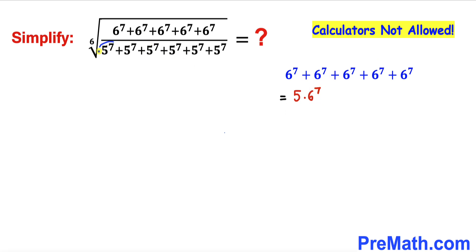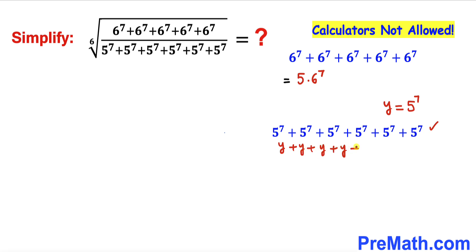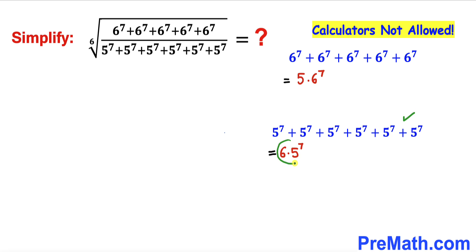Likewise, let's focus on the denominator part. Now let's assume that 5^7 is y, so y equals 5^7. Then this expression could be written as y plus y plus y plus y plus y plus y plus y — six times. Combining all these y's gives us 6 times y. We know y is 5^7, so therefore this could be written as 6 times 5^7.